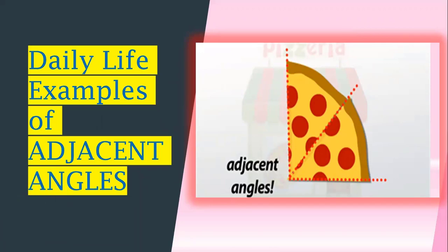You can think of adjacent angles as two bigger slices next to each other in a pizza box. The corners of the slices are both at the center of the box, so that is the vertex. The cut where the slices are separated from each other is the common arm. So we can see that pizza slices show the adjacent angles.